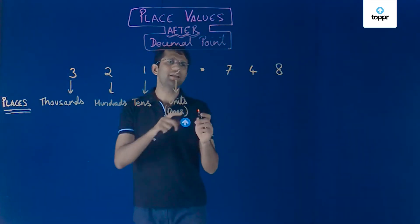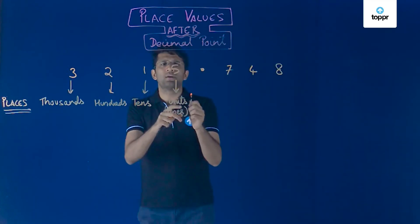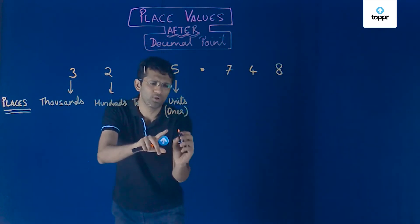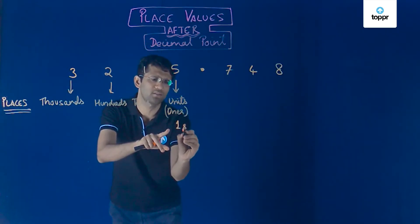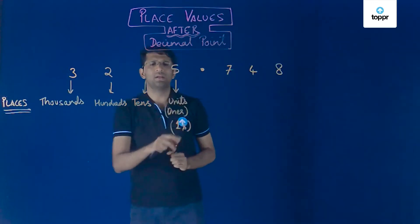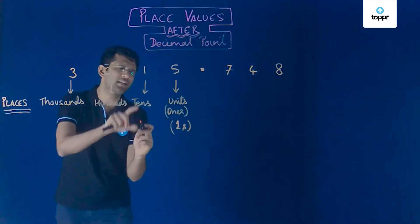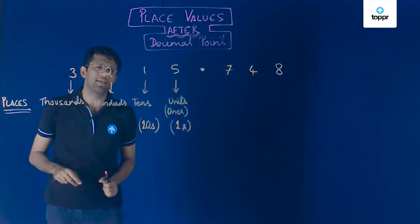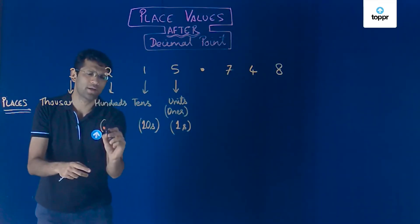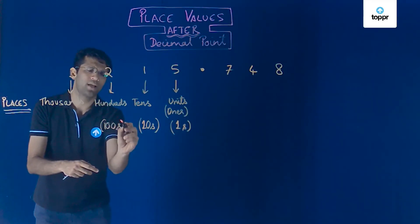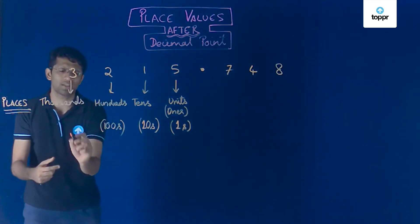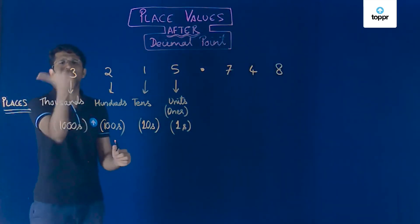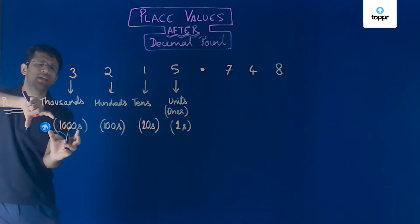To understand this, note that to the left of the decimal point we first have the units digit, so this is the units place — also called the ones place. The next digit 1 is at the tens place. To the left of that comes the hundreds place, and to the left of the hundreds place comes the thousands place and so on. As you move left, the place value increases by a factor of 10.